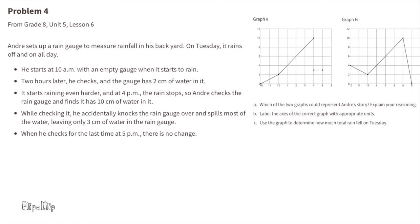Problem number 4 from 8th grade Unit 5 Lesson 6. Andre sets up a rain gauge to measure rainfall in his backyard. On Tuesday it rains off and on all day. Part a: Which of the two graphs could represent Andre's story? Explain your reasoning. There are a couple of clues. He starts at 10 a.m. with an empty gauge when it starts to rain. On graph A it starts at 10 a.m. with zero rain in the gauge, but graph B doesn't start at 10 a.m., so I'm going with graph A.